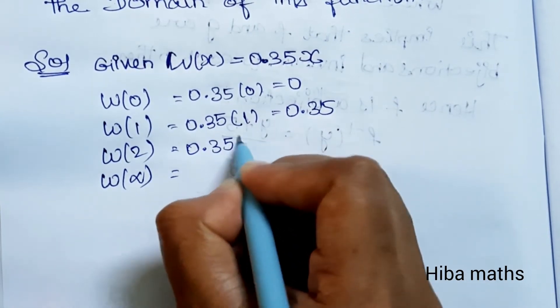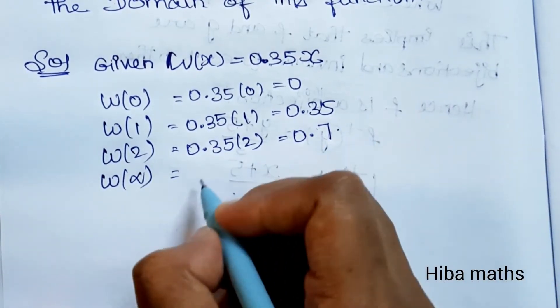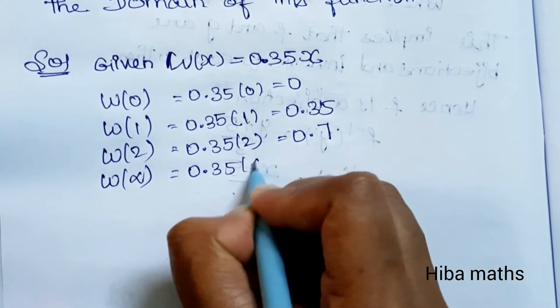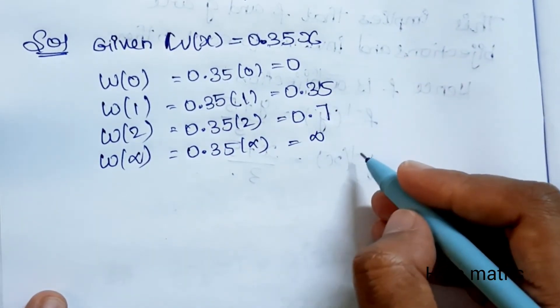w(2) = 0.35 × 2 = 0.70. w(infinity) = 0.35 × infinity = infinity. So we need positive values.